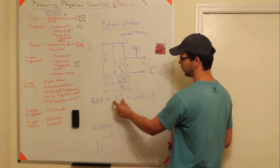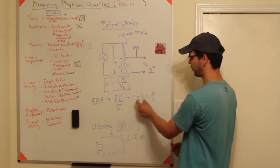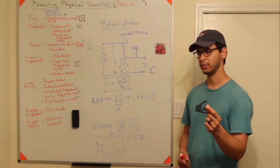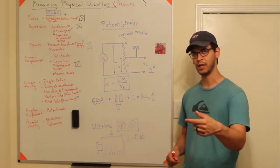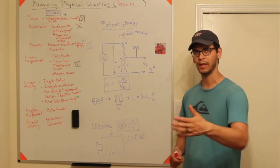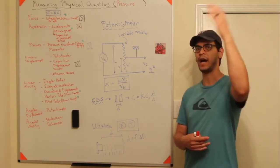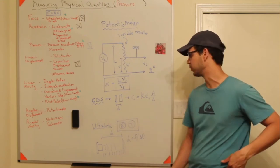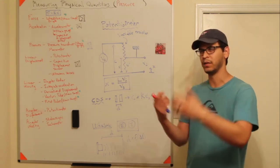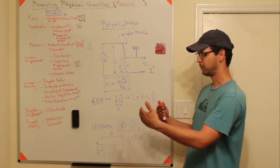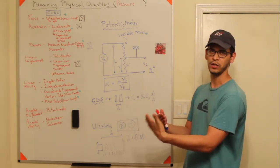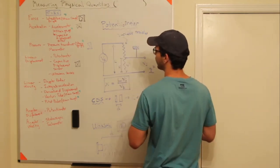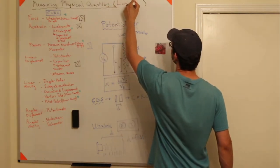The same principle applies to capacitive displacement sensors — the capacitance changes with distance between the two plates. To measure capacitance you have to send an AC voltage through it and measure the cyclic response of a known sinusoidal input. The key point is that changing the distance of the two plates changes capacitance, which affects an electrical quantity.